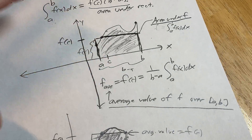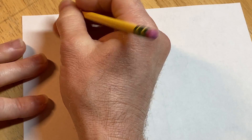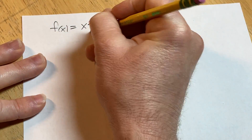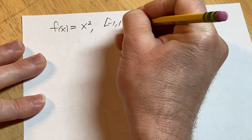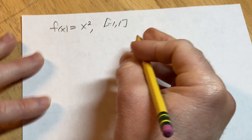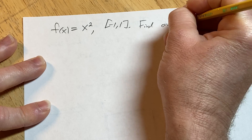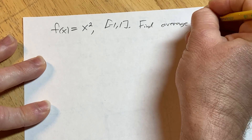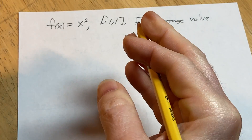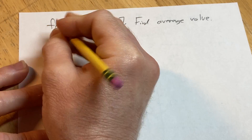Let's do an actual example with numbers. We'll pick something easy: f(x) = x², over the interval from negative one to one. We're going to find the average value of this function over this interval, find c, and draw the corresponding picture.